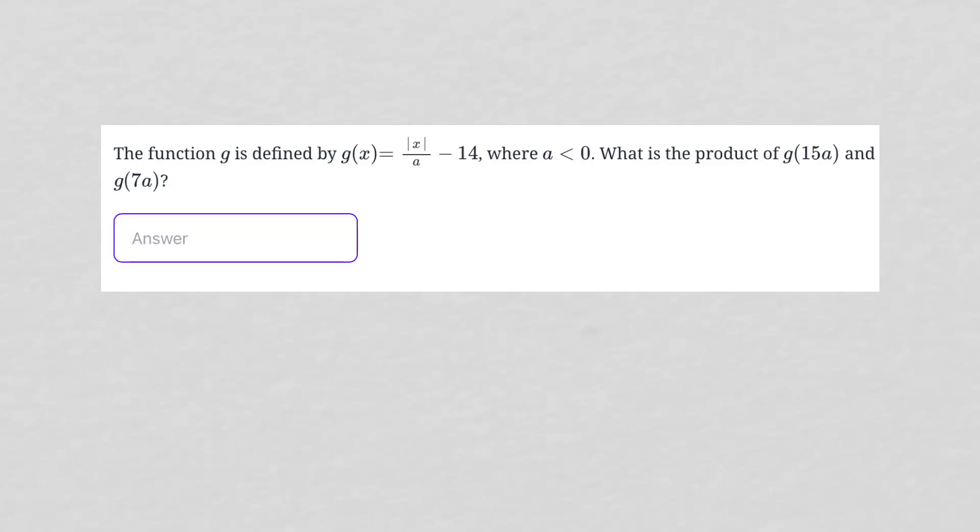This question says the function g is defined by g(x) equals absolute value of x over a minus 14, where a is less than 0. What is the product of g(15a) and g(7a)?